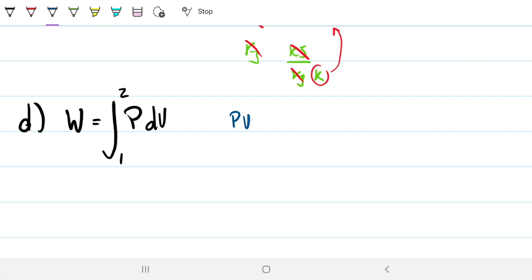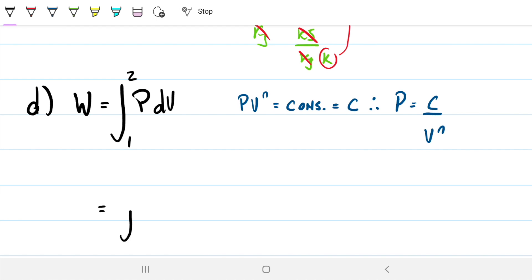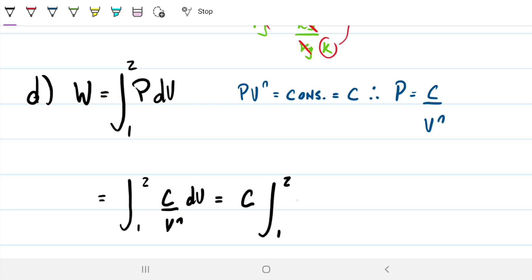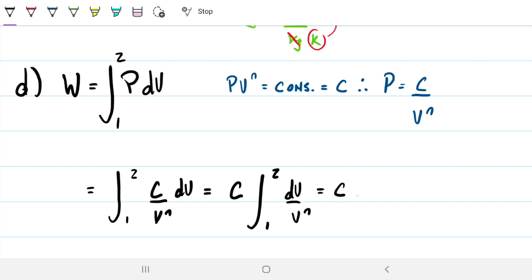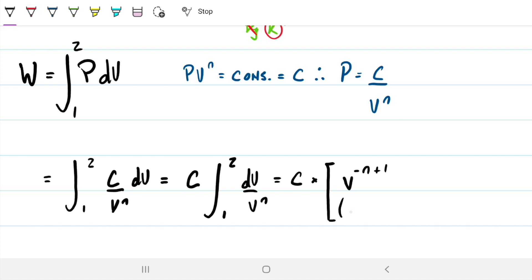What we know about a polytropic process: PVⁿ is a constant. We can call the constant C to simplify things. So that means P = C/Vⁿ. I'm going to substitute that in. So we have W = integral from 1 to 2 of PdV = integral from 1 to 2 of (C/Vⁿ)dV. Because it's a constant, I can take it out of the integral and just multiply it throughout. So that leaves us with C times integral of dV/Vⁿ. That's a very simple integral to do. That's going to give us the constant times [V^(-n+1)/(-n+1)] evaluated from V₁ to V₂.